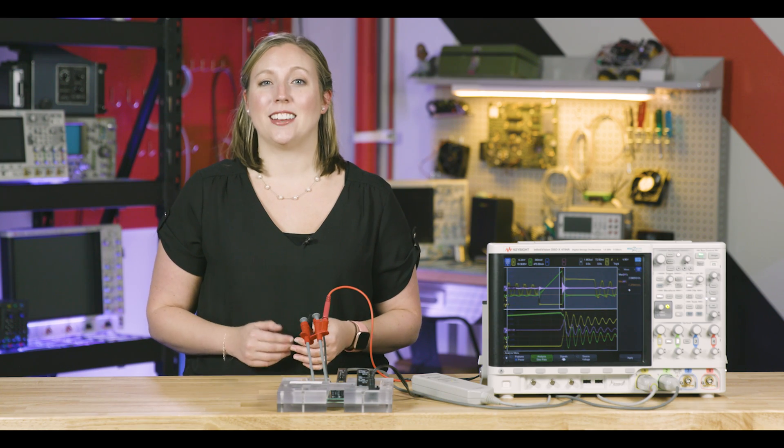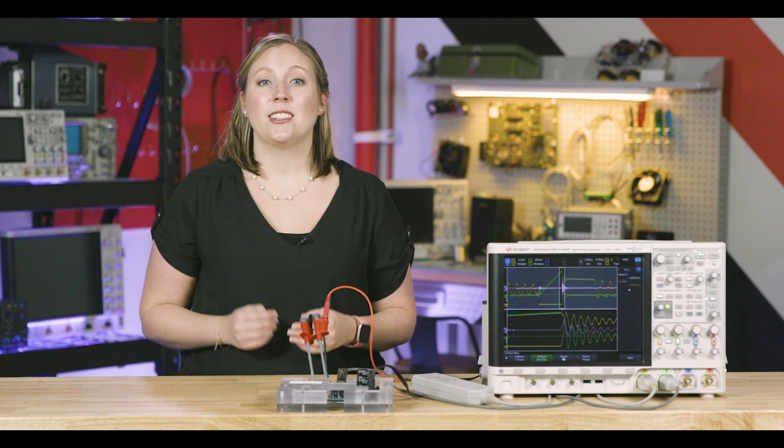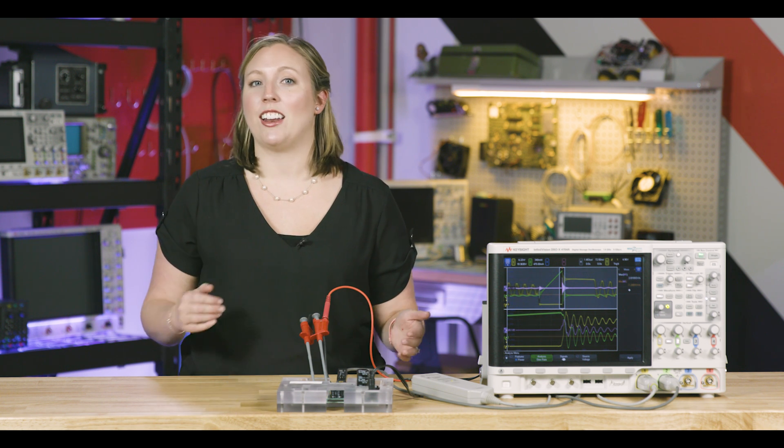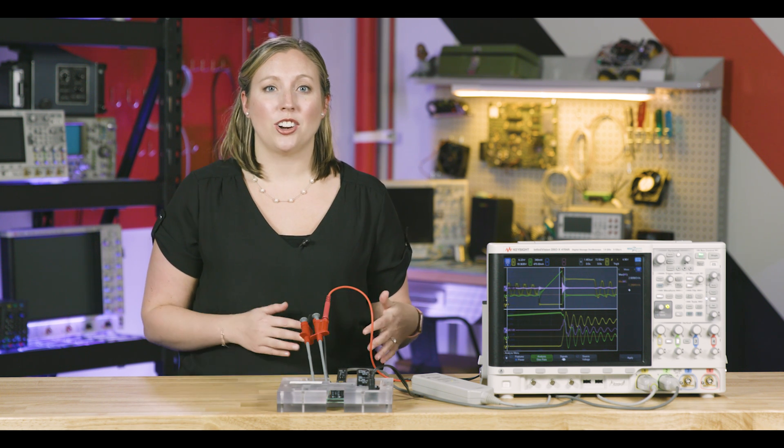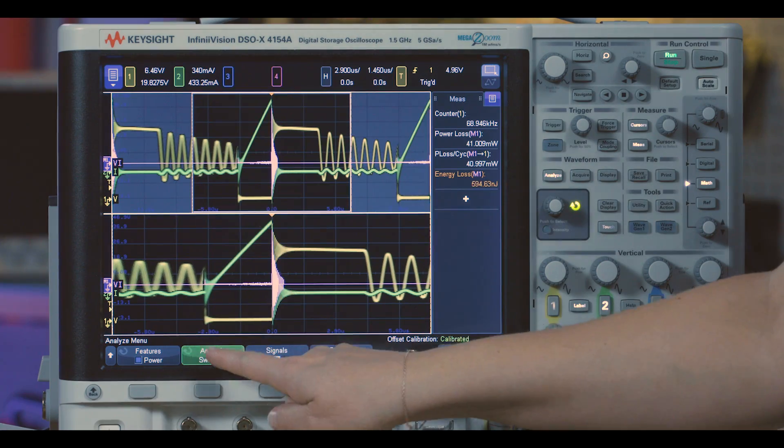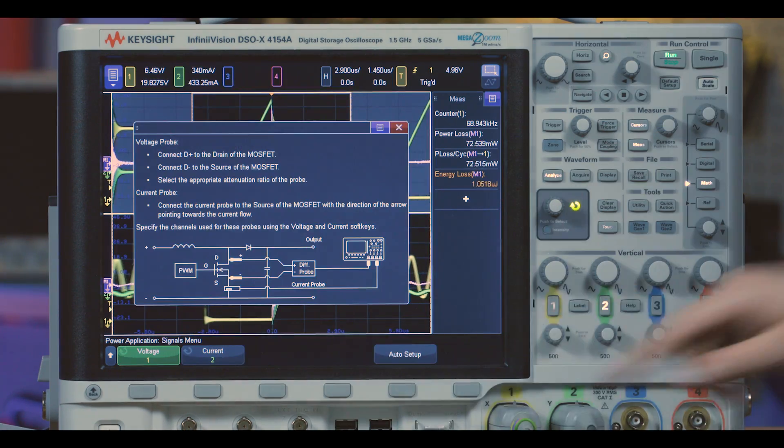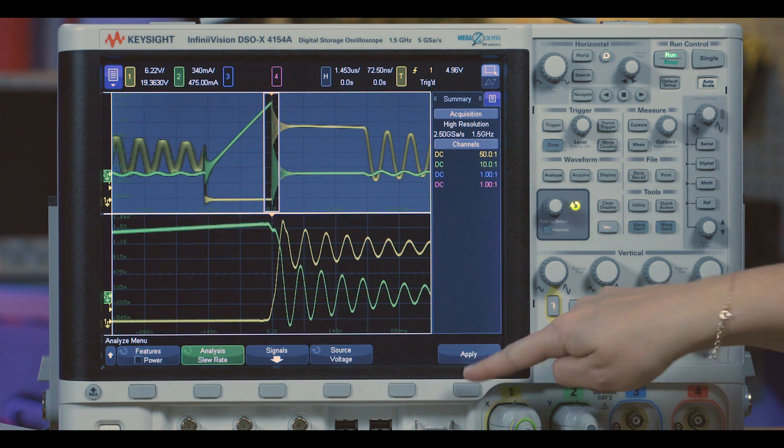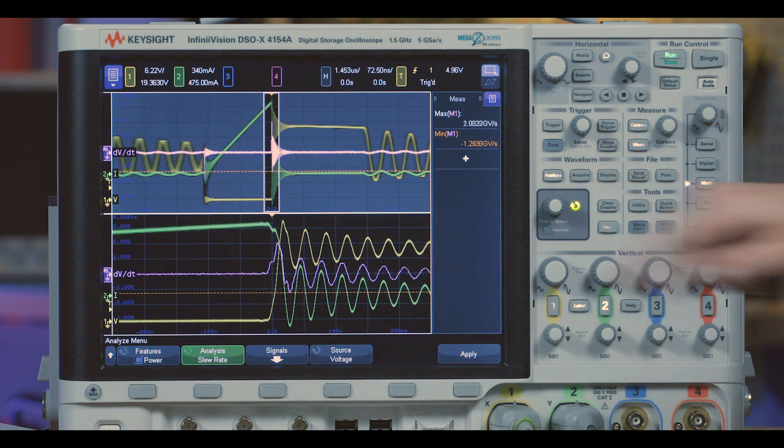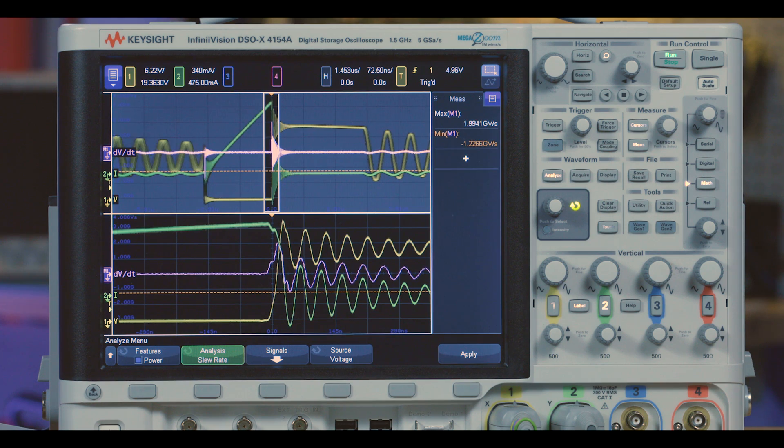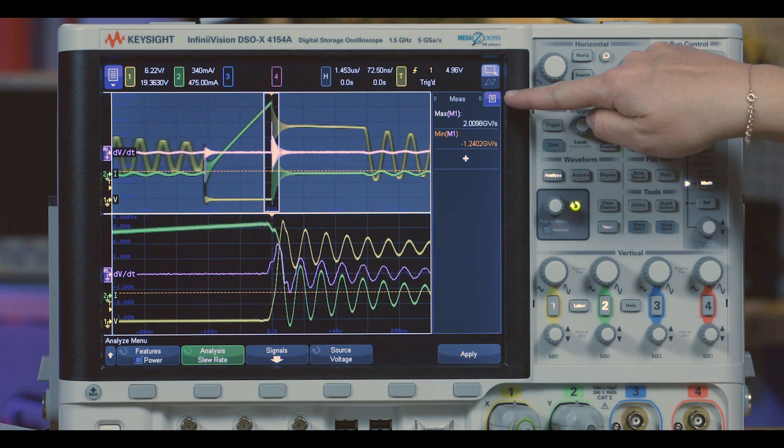Let's look at one more measurement, slew rate. This determines how fast your device turns on and off. The faster you can turn on and off, the lower losses you'll have. We'll follow similar setup steps as before. The purple trace is the derivative of your voltage over time, so the peak of this is the maximum slew rate.